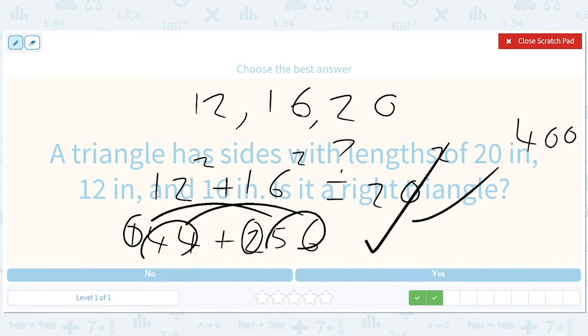But the other thing you can do is you can say if I divide all these by 4, that's going to give me 3, 4, 5. So it's similar to a 3-4-5 triangle, and we know that a 3-4-5 triangle is a right triangle. So either way, the answer is yes.